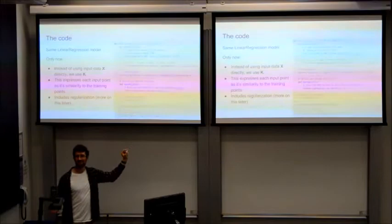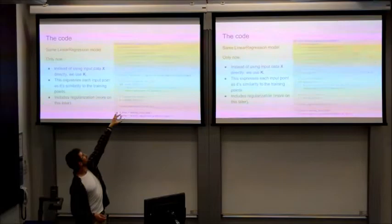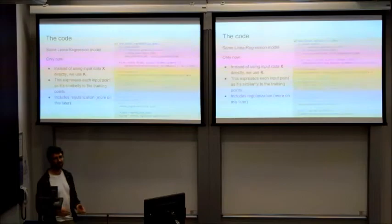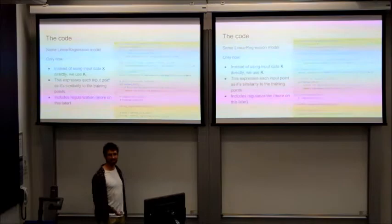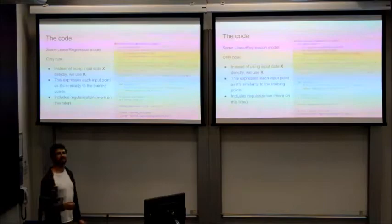What we're doing is instead of representing our points as a single data point, like the square footage of the house, we're actually representing it as its distance to all the other points in the training set. This point is really similar to that point, that point is very far away from all these points over here. And that set of distances becomes our feature for each point of our data. Then we simply learn the mapping from that representation to our target variable, in this case the house price, using this feature representation instead. Fortunately, the actual linear regression part stays exactly the same.